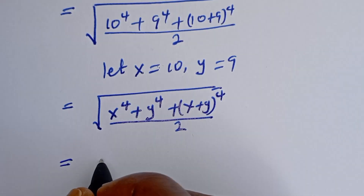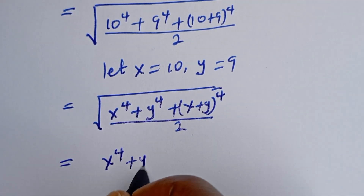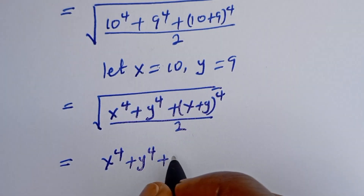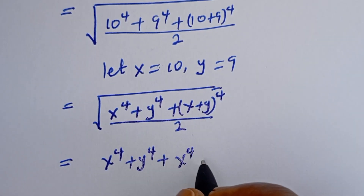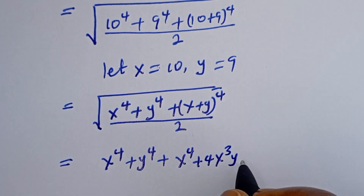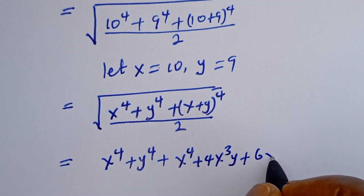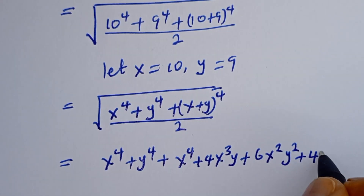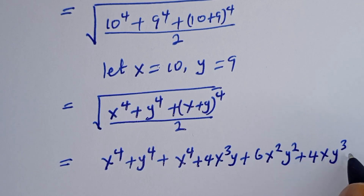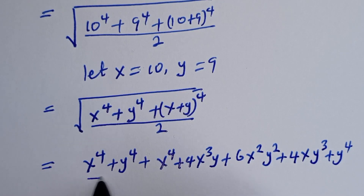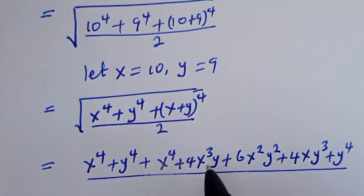This is equal to S to the power of 4 plus Y to the power of 4 plus, if you expand (S plus Y) to the power of 4, we have S⁴ plus 4S³Y plus 6S²Y² plus 4SY³ plus Y to the power of 4. Then all over 2.